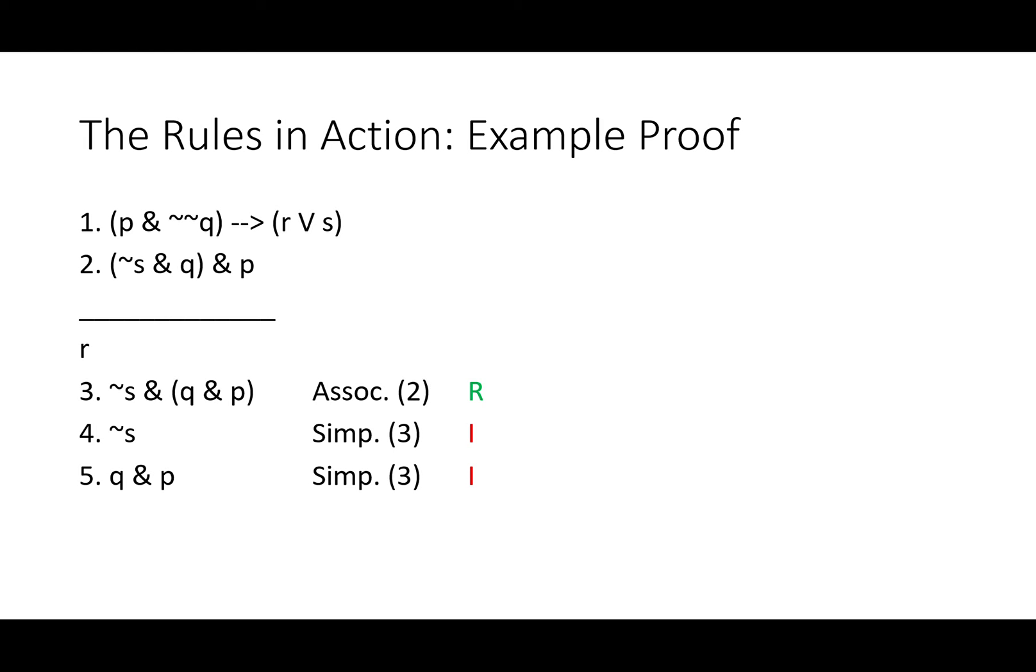Now we'll do simplification again, again to line three, just getting the right side of that ampersand, Q and P. If we felt like we needed to, we could do simplification two more times to line five.